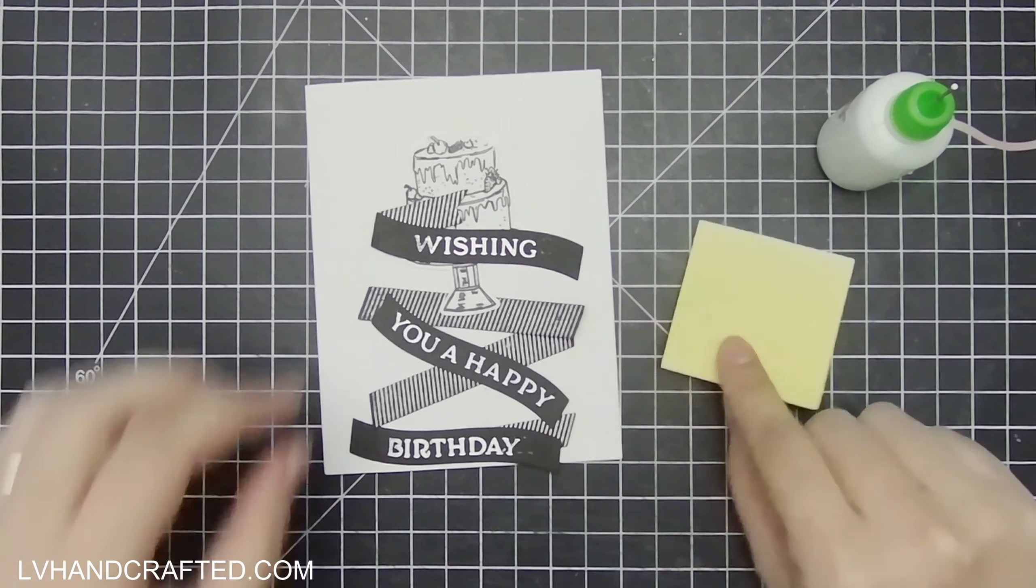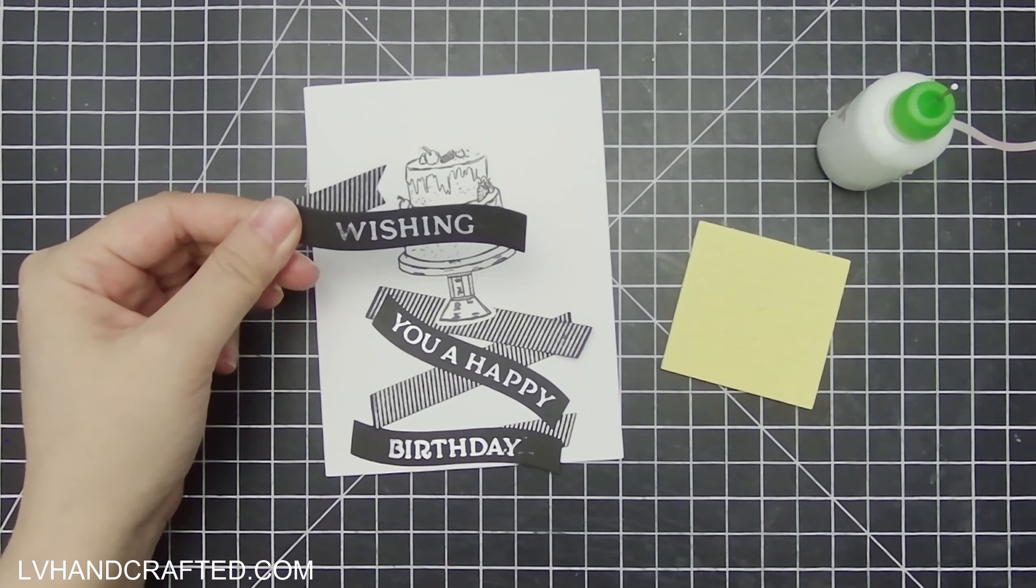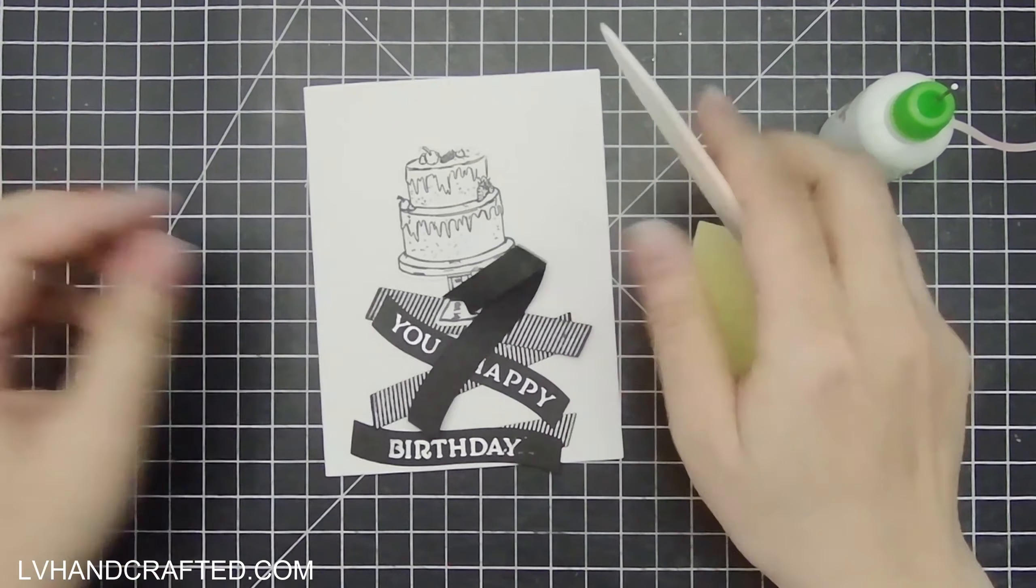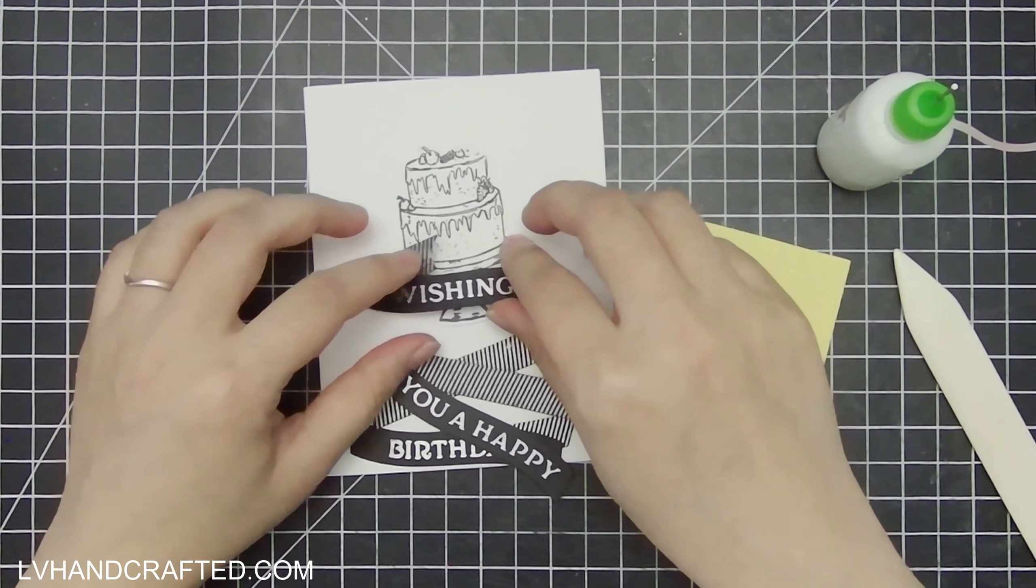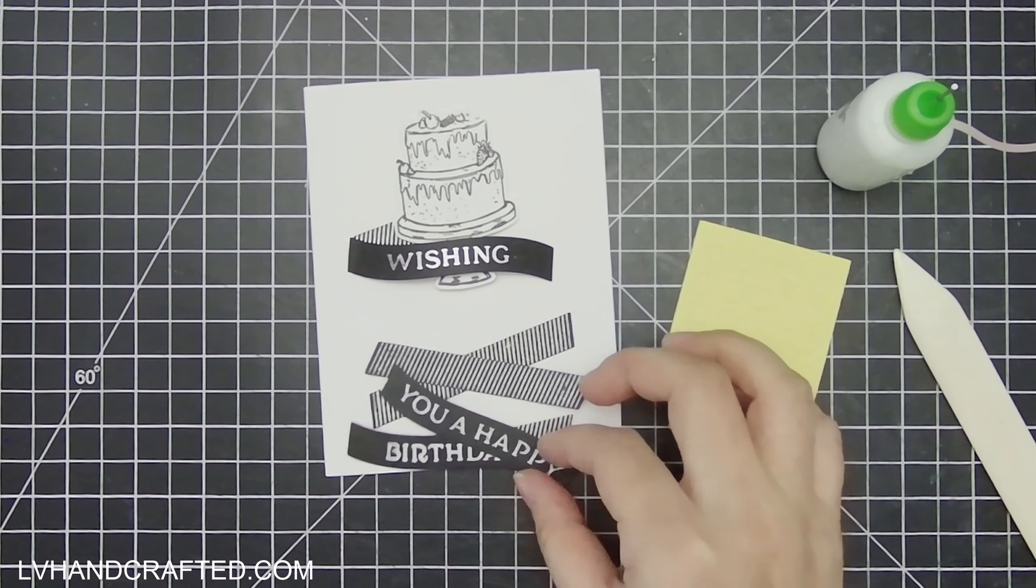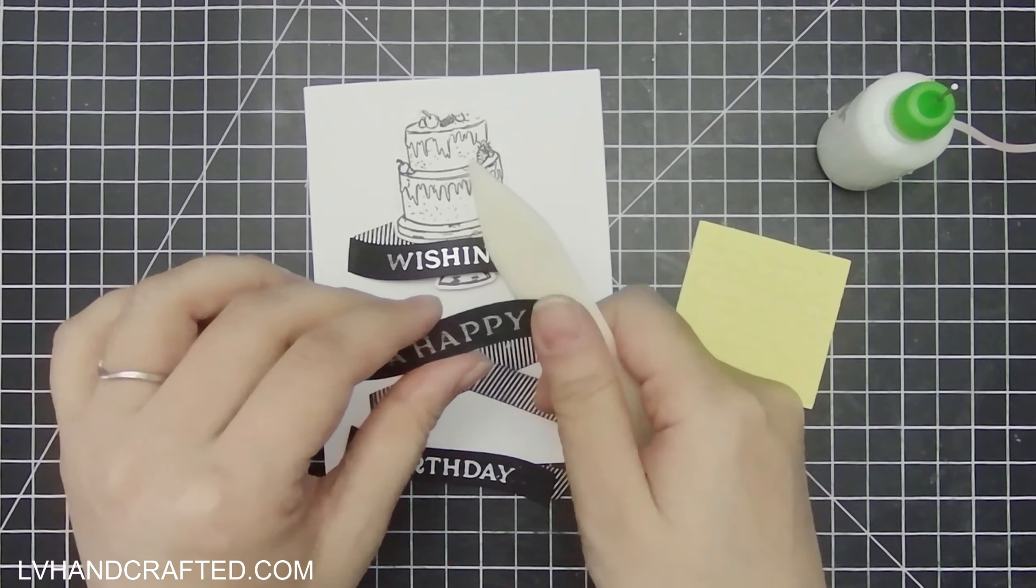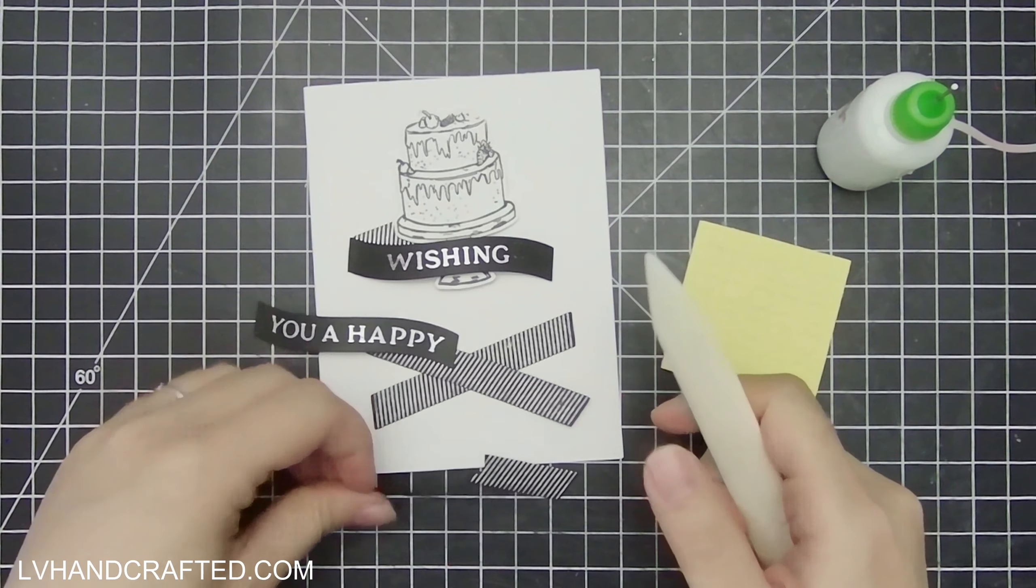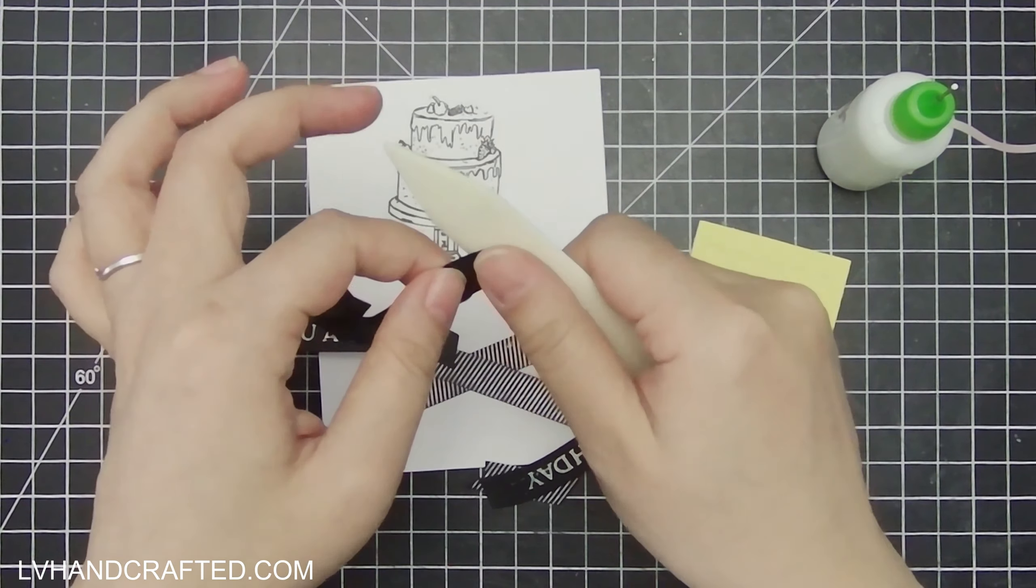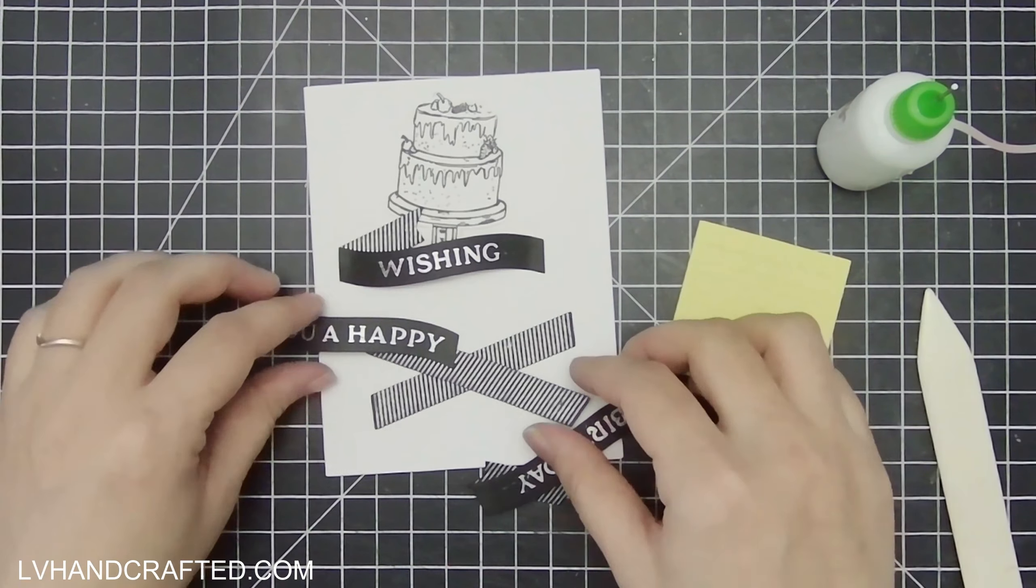I am combining the cake stamp with this really awesome Glimmer foil banner. I think this was one of the Glimmer Club sets. And I'm not a member or a subscriber of their clubs, but I do buy them when they go on sale after the fact. And this was one that I thought was really awesome because there are different sentiments that you can foil onto the banner.